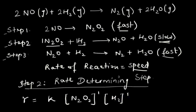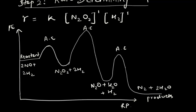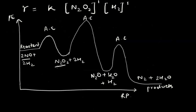Now let's study the potential energy diagram for this multi-step reaction. The y-axis is potential energy and the x-axis is reaction progress. We see three peaks, which correspond to the three steps. Step 1, which is fast, has a small activation energy — the smaller the activation energy, the faster the step.